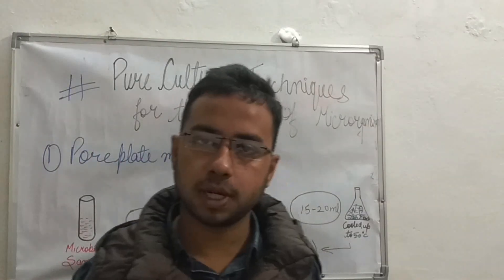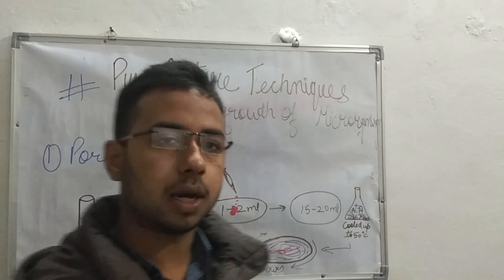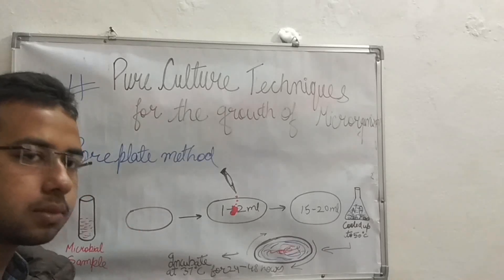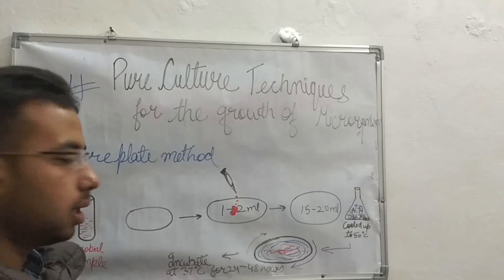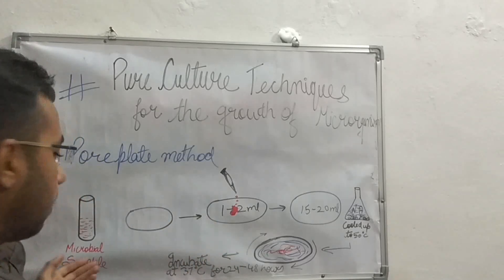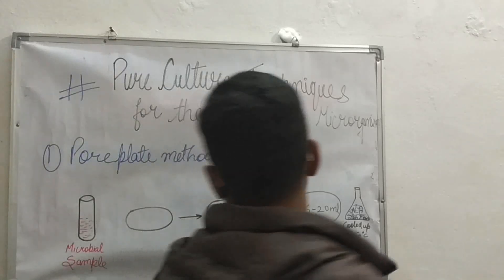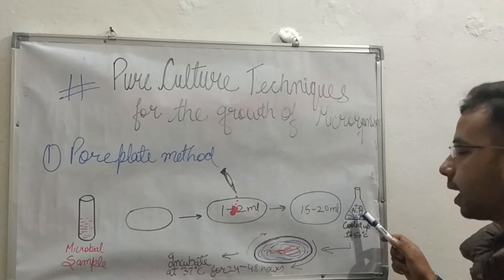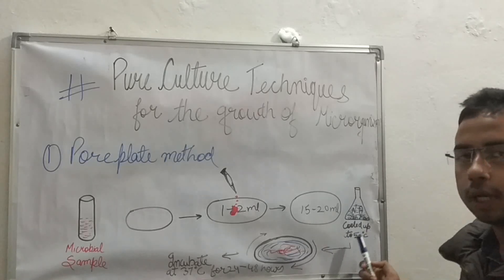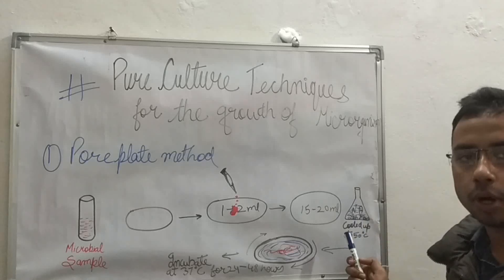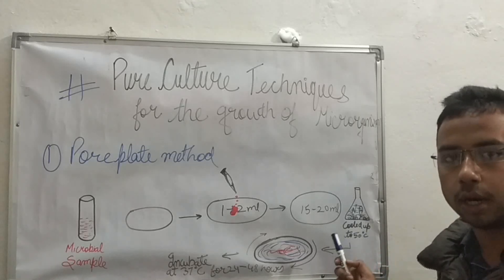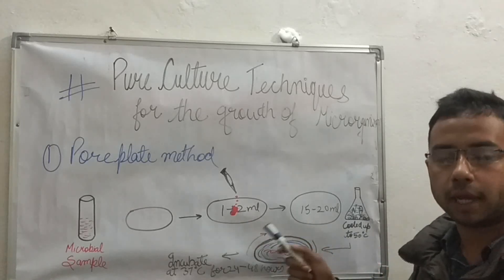The first method is the pour plate method. A microbial sample that is 10-times diluted is taken, and one to two ml of the microbial sample is poured into a sterile petri plate before pouring the nutrient agar solution. The nutrient agar solution is autoclaved before use and cooled down to 50 degrees Celsius. This is the most important point — the agar should not be too hot, because if it's too hot it will kill the microorganisms in the sample.